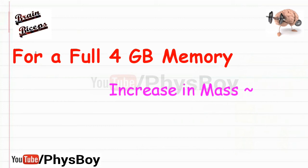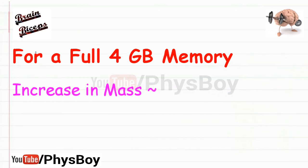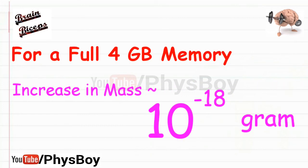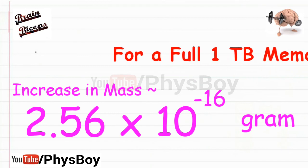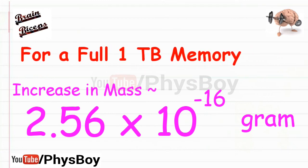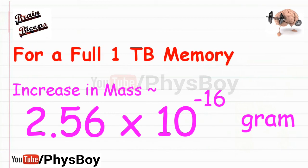Mathematically, it can be calculated that for 4 gigabyte memory, this would mean a rough increase in weight of 10 to the power minus 18 grams. So for a full 1 TB hard disk, the increase in weight will be 2.56 × 10⁻¹⁶ grams. Certainly this value is very less than what you would be able to feel.